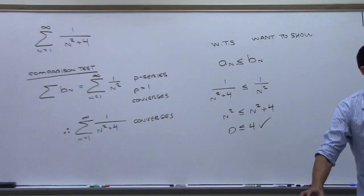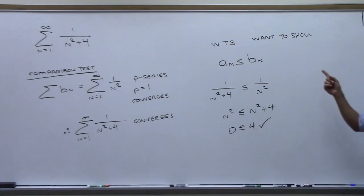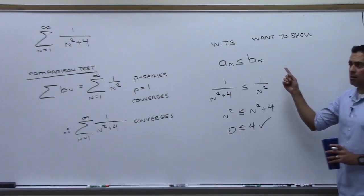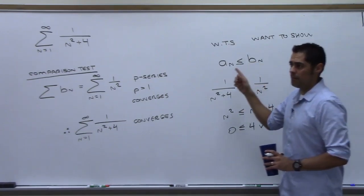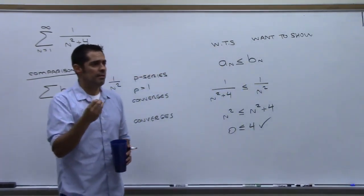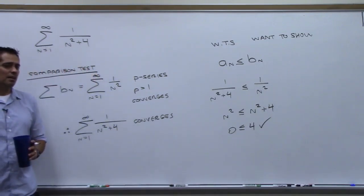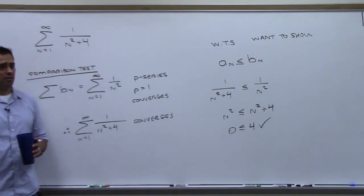It converges. So you don't have to find what it converges to. We can only find what geometric series and telescoping series converge to. The integral test — if it gives us a number, that still is not what our series converges to. It only tells us if it converges or not.